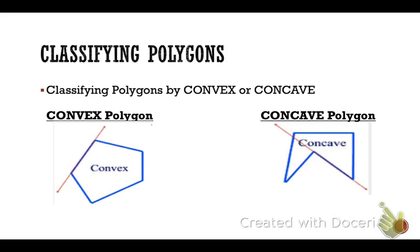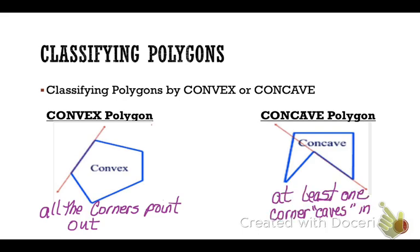You can also classify polygons, and we have three ways of classifying them. The first is classifying polygons as either convex or concave. A convex polygon is one where, if you extend the sides, the sides do not pierce the interior — think of all corners pointing out. A concave polygon is one where, if you extend the sides, it pierces the interior, meaning at least one of the corners caves in.